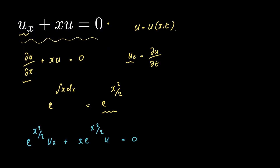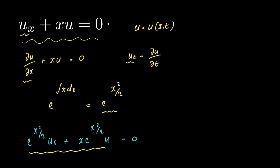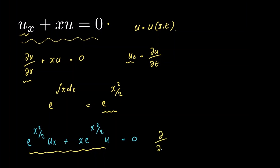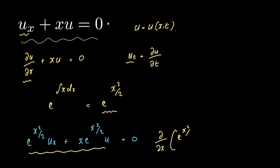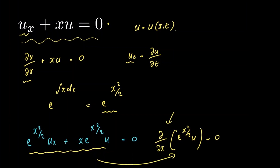We can rewrite what we've got here using the product rule for partial derivatives. We have the partial derivative with respect to x of e raised to x squared divided by 2 times u, is equal to 0. If you're unsure of why this is, differentiate this using the product rule and you'll see that they're equal.